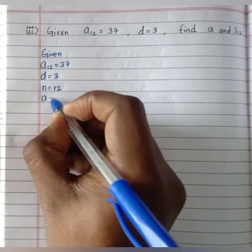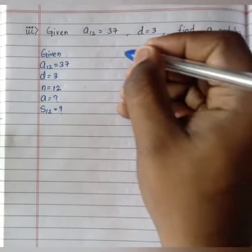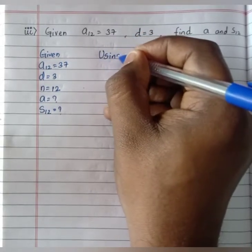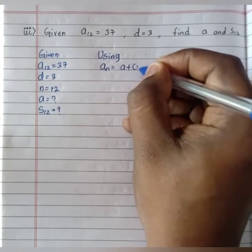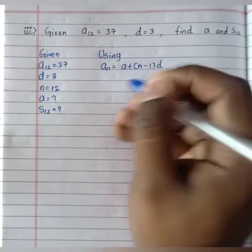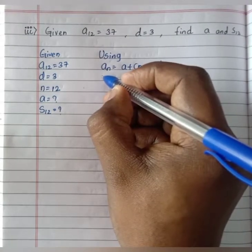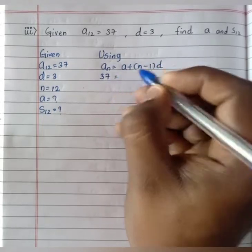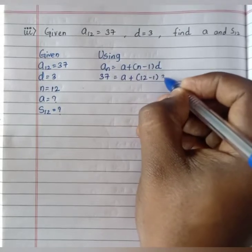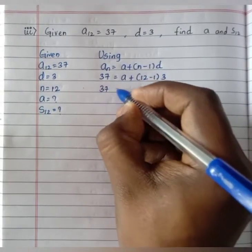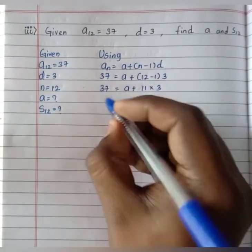We should find a and S12. Using the nth term formula an equals a plus n minus 1 into d, we will find the first term a. The last term an is 37, so 37 equals a plus 12 minus 1 into 3.